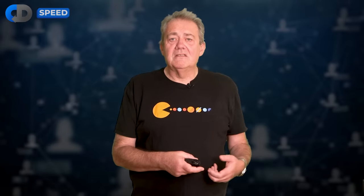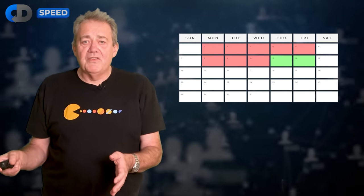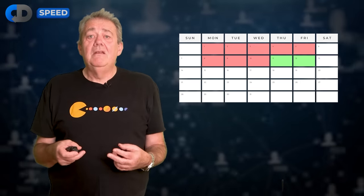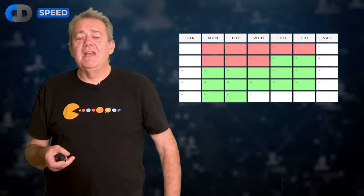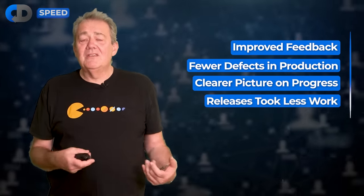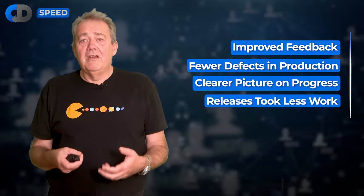My team, tasked with addressing this problem, did loads of work to optimize the process — we rewrote the build, bought new hardware, and optimized the running of tests in various ways. We ended up with a commit stage of 12 minutes — still a bit too long but much better — and an acceptance stage of 40 minutes. In the first two weeks following the rollout of this faster build, with no other changes to teams, technology, or process, we had two completely green builds, and for the rest of my time in that organization we had at least one green build every single day. Feedback improved, defects in production went down, developers got a clearer picture, and releases took less work — all by simply focusing on improving the speed of feedback.